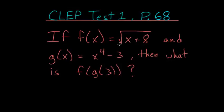If f of x is equal to the square root of x plus 8 and g of x is equal to x to the fourth power minus 3, then what is f of g of 3?